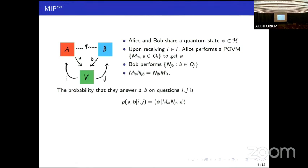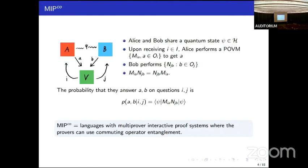But there's a bigger class of entanglements that the players can use, and this is commuting operator entanglement. Instead of a state in a tensor product where one factor is Alice's and the other factor is Bob's, Alice and Bob share some state in just a particular Hilbert space H. They still condition their answers on POVMs, but now the only restriction is that their measurements have to commute with one another. The probability that they get answer pair AB on question pair IJ is again this expectation value. We denote the class of languages with these types of strategies as MIP co.